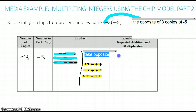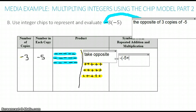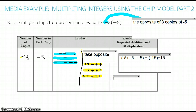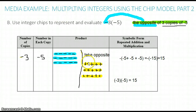All together, we have the opposite of adding negative 5 to itself three times, which gives us the opposite of negative 15, which we know is positive 15. Using multiplication, we would write negative 3 times negative 5 equals positive 15. So the product of these two negative numbers was positive.